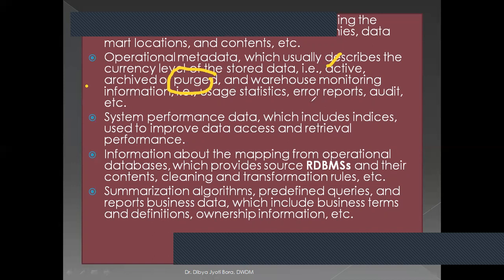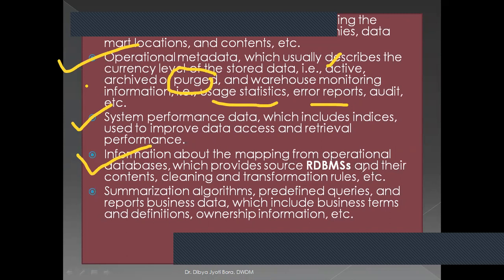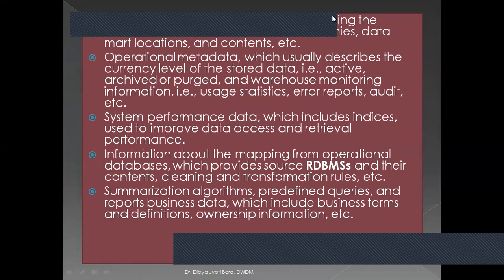Metadata also includes warehouse monitoring information — statistics of users, error reports, etc. — and system performance data, which includes indices used to improve data access and retrieval performance. It also contains information about the mapping from the operational database, including source RDBMS contents and cleansing and transformation rules, summarization algorithms, predefined queries, and business data such as business term definitions and ownership information.